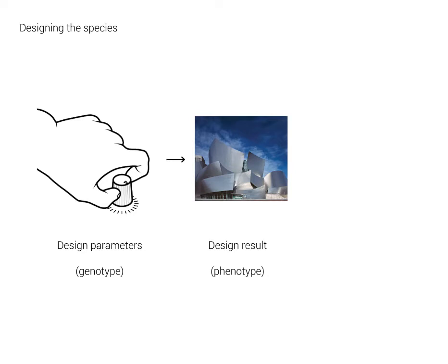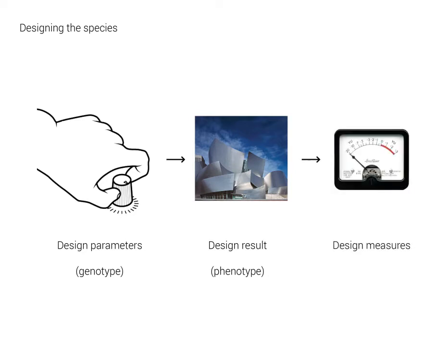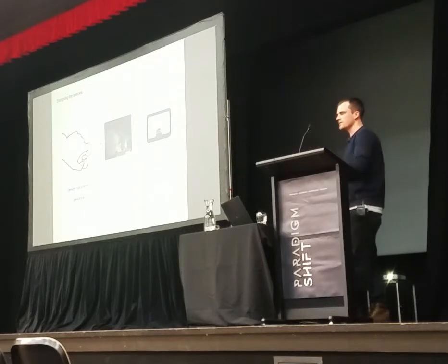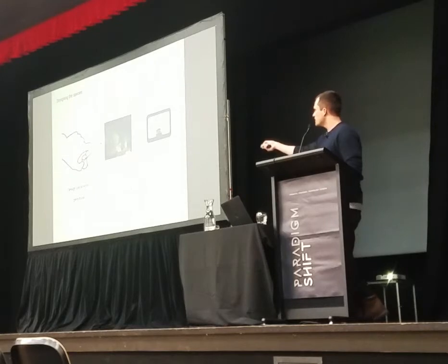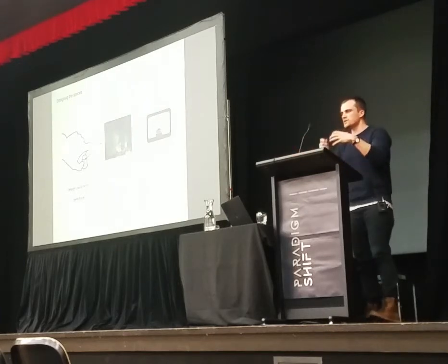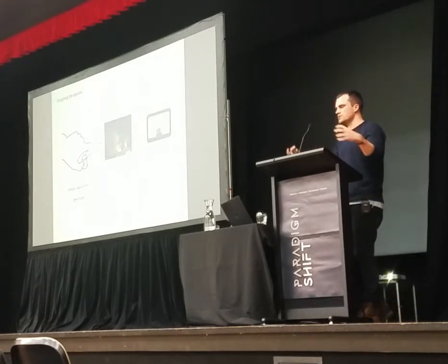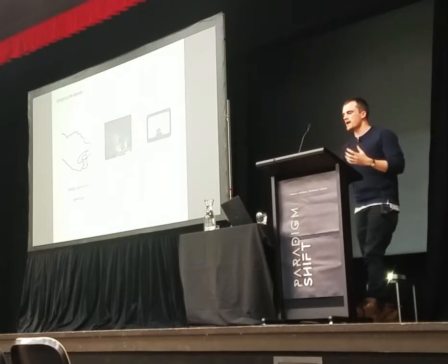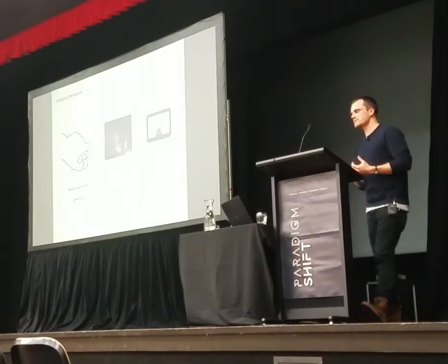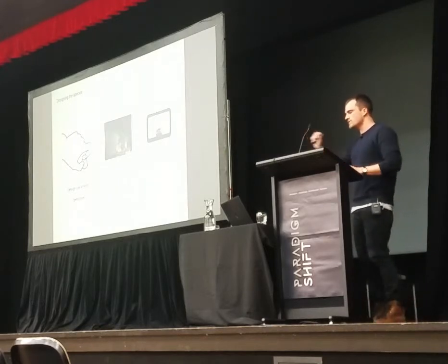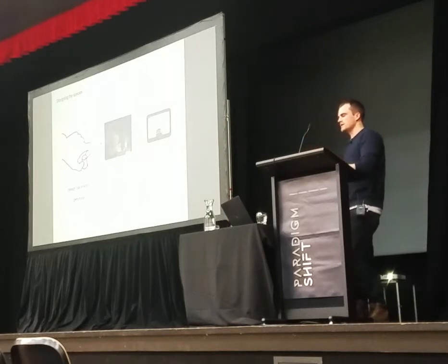We need to give numerical measures that tell the computer how performance works. If we create this kind of model — with input knobs and output gauges as a user interface — the computer gains access to our design system. We can then take advantage of computational systems called optimization algorithms, which can take our models and — without knowing anything about architecture, design, or aesthetics — tweak those parameters and monitor the metrics to create better and better designs.